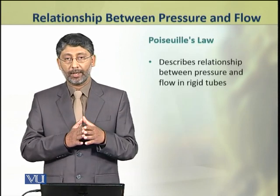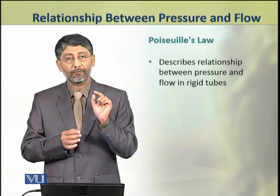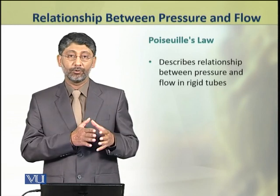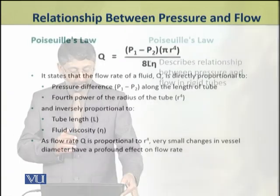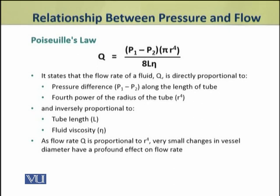Dear students, the relationship between pressure and flow in rigid tubes is described by Poiseuille's law. Poiseuille's law states that the flow rate of a fluid, represented by Q, is directly proportional to the pressure difference along the length of the tube, and it is also directly proportional to the fourth power of the radius of the tube.